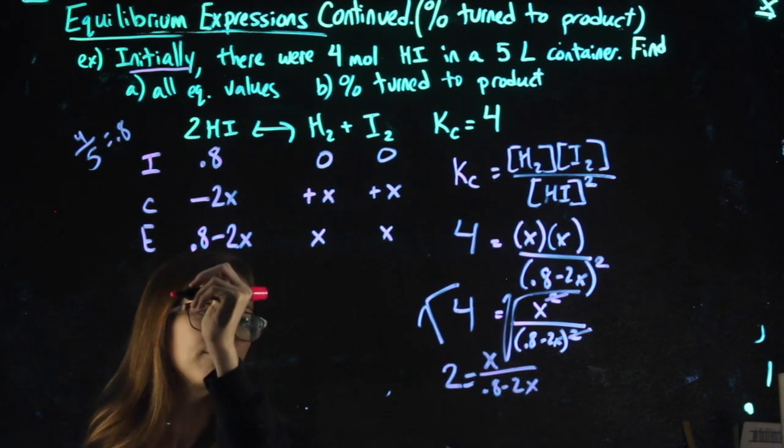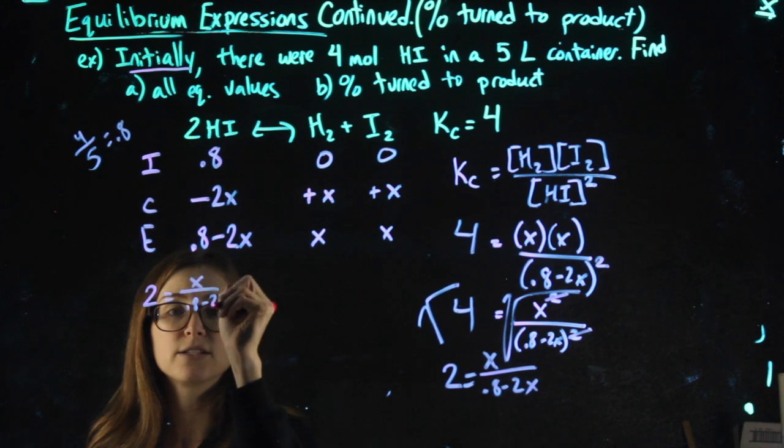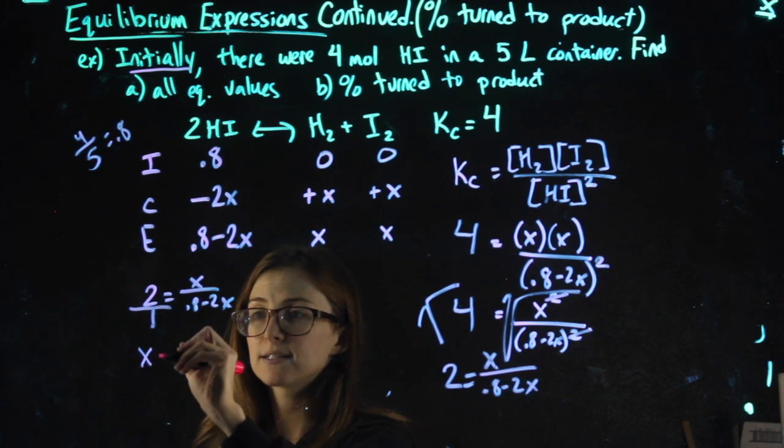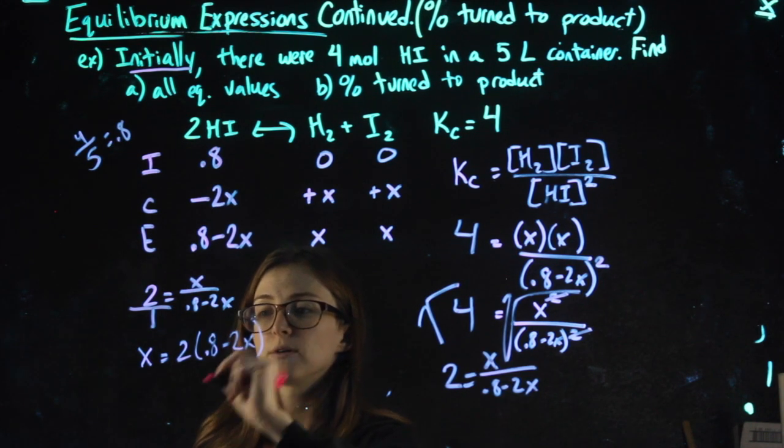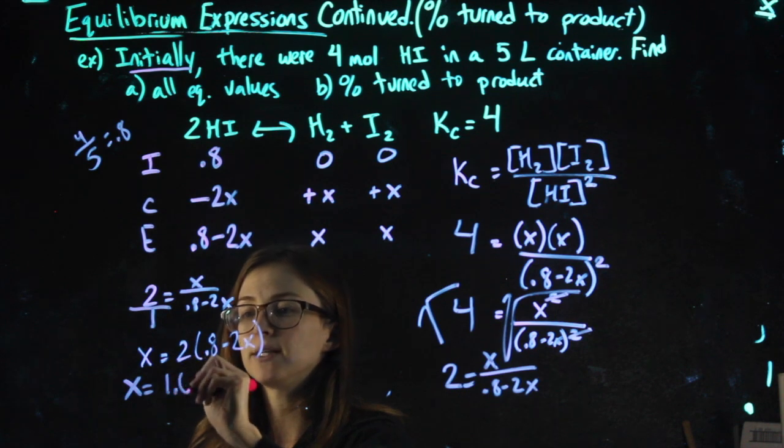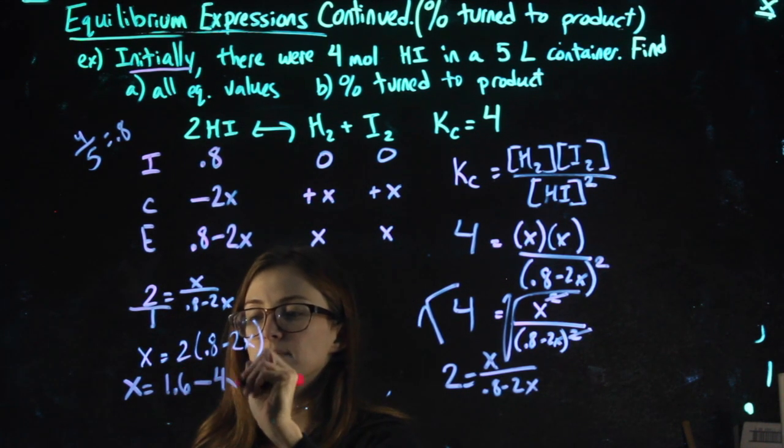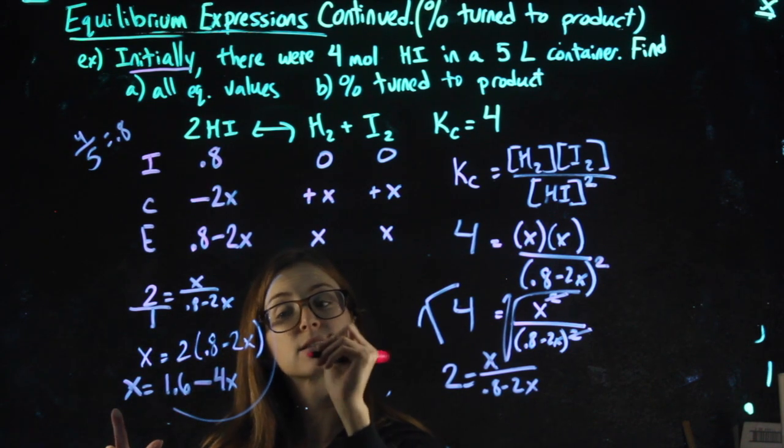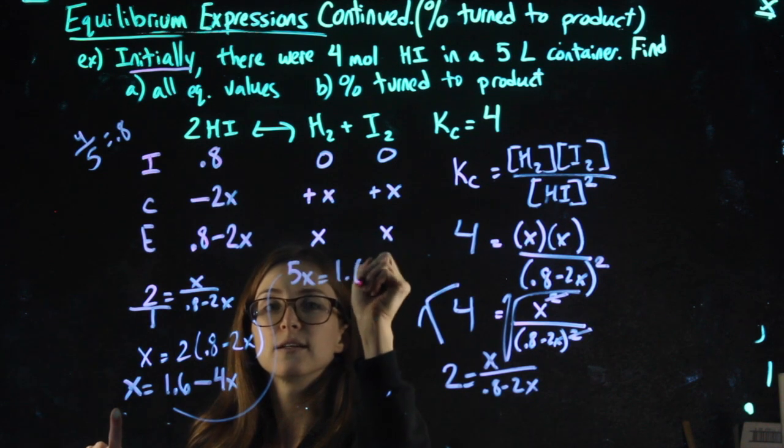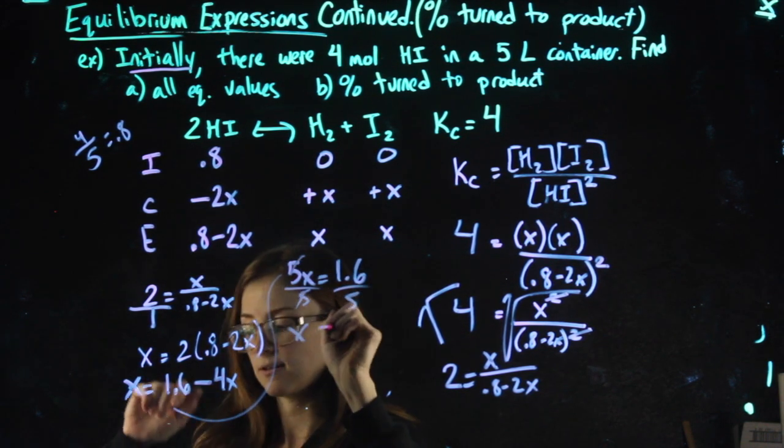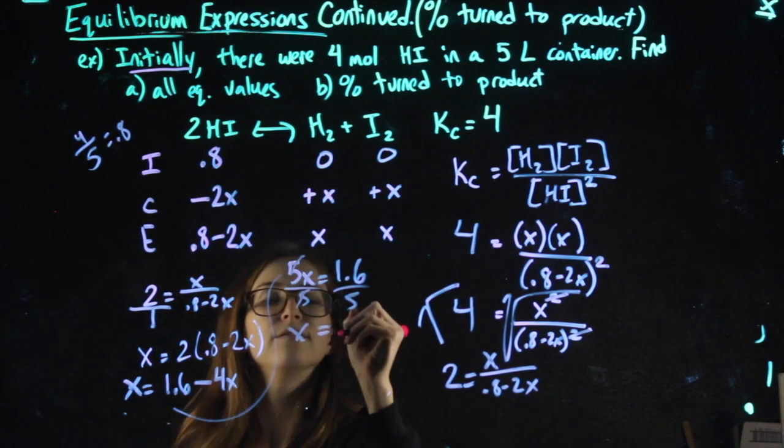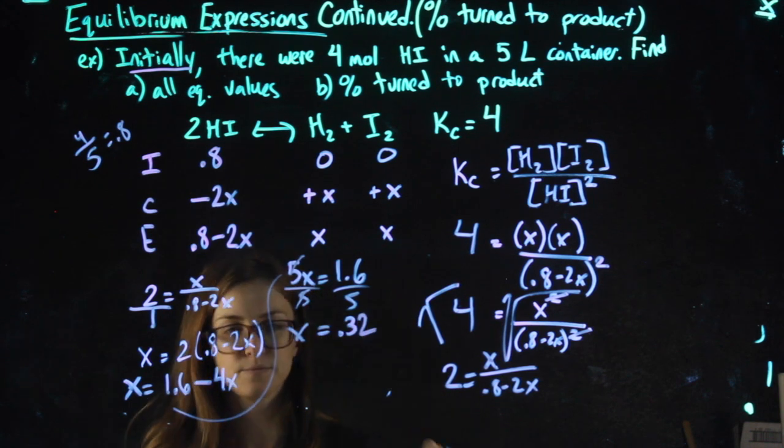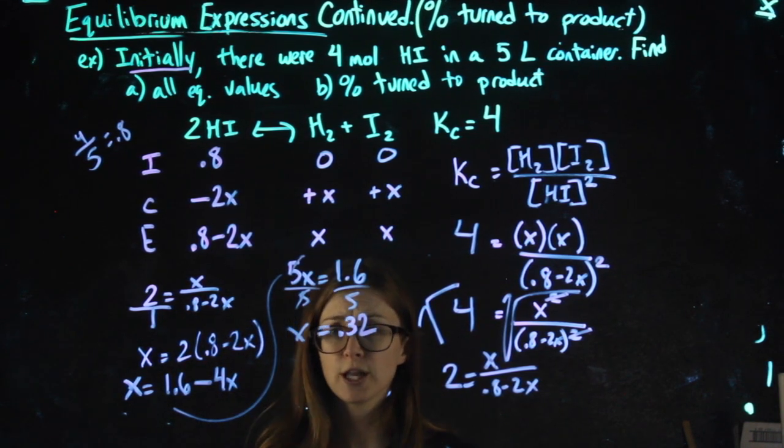Moving over here so I have more room, I have 2 equals X over 0.8 minus 2X. At this point, my advice: put this over 1 and cross multiply. X times 1 is X, and then the 2 is going to have to distribute through, so X equals 2 times 0.8, which is 1.6, and 2 times negative 2X is minus 4X. Adding the 4X over, this is 1X plus another 4X, gets me 5X. Then I can divide by 5: 1.6 divided by 5 gets me 0.32.